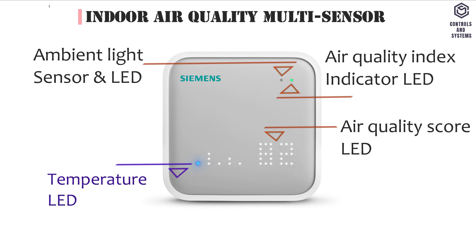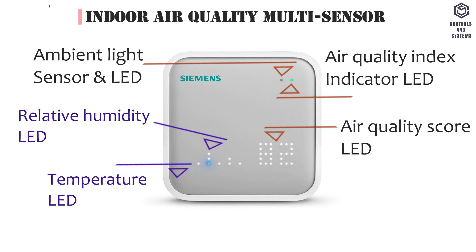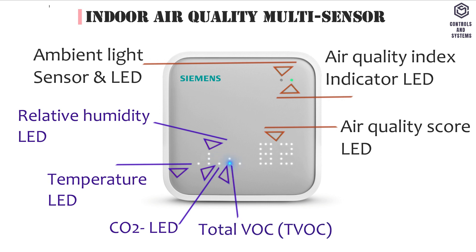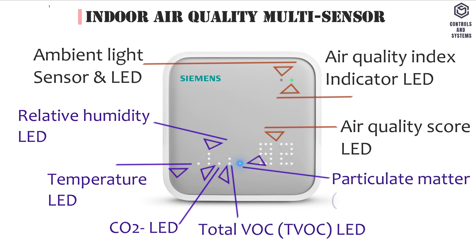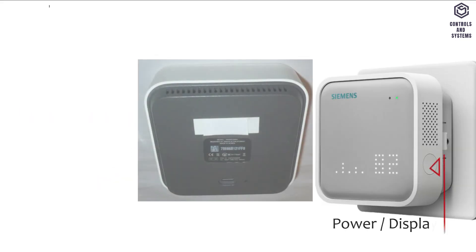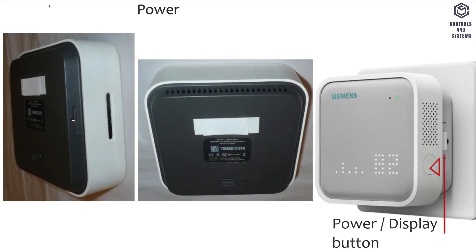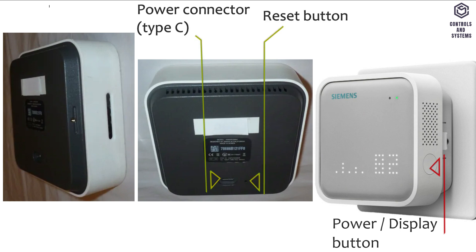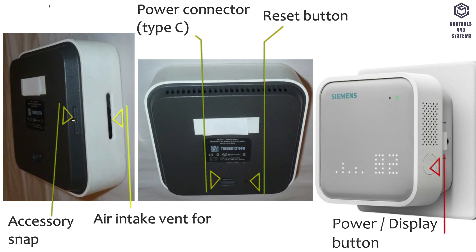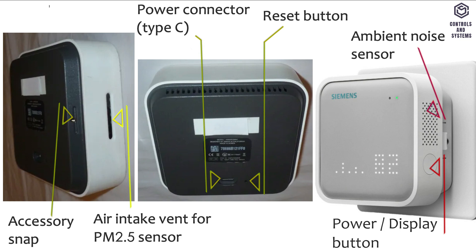This is the Temperature LED. This is the Relative Humidity LED. This is the CO2 LED. This is the TVOC LED. This is the Particulate Matter LED. This is the Power and Display Button. This is the Power Connector, Type C. This is the Reset Button. This is the Accessory Snap. This is the Air Intake Vent for the PM2.5 Sensor. This is the Ambient Noise Sensor.